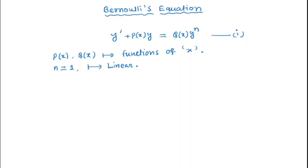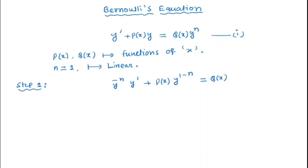Step 1: We divide both sides of equation 1 by y to the power n. So we get y^(−n) times y prime plus p(x) times y^(1−n) equal to q(x).